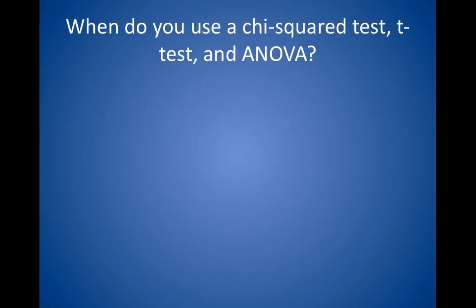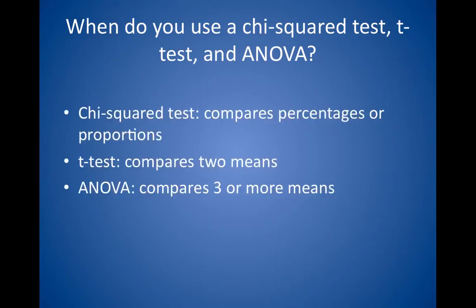When do you use a chi-squared test, t-test, or analysis of variance test? All of these tests are used to compare different sets of data. The chi-squared test compares percentages or proportions — non-numeric or nominal data. The t-test compares two means. The analysis of variance compares three or more means.